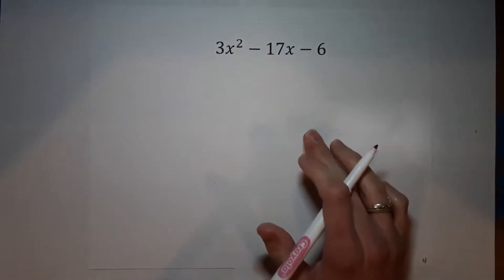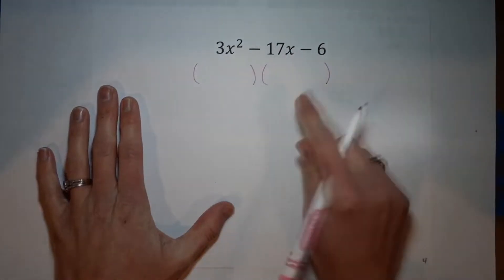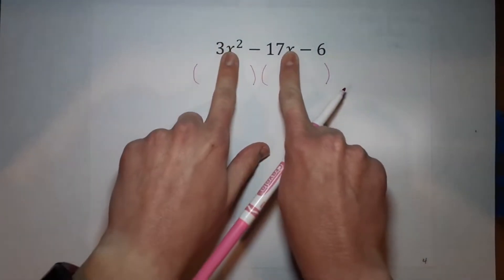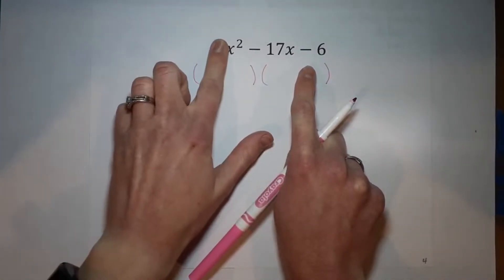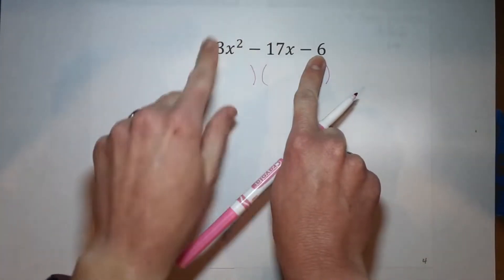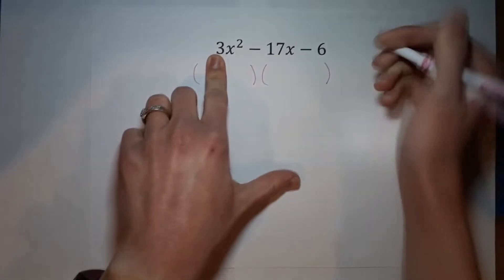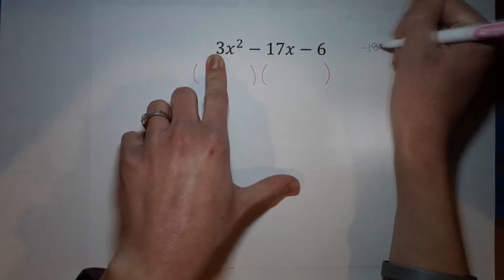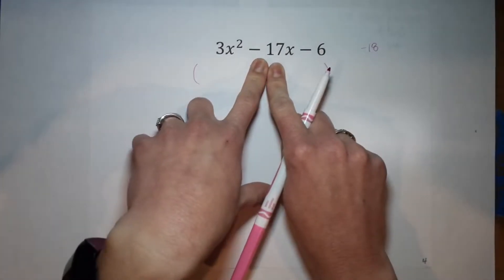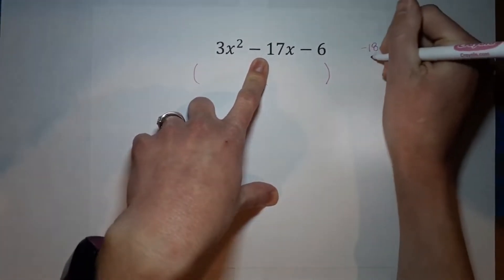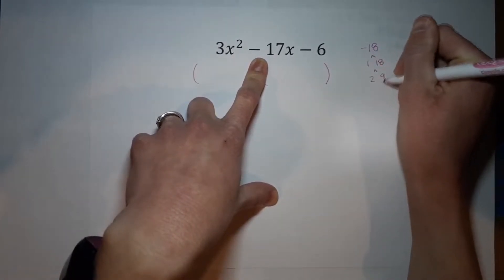So now what? Remember what we're looking for is two parentheses that multiply to each other to give me that. The first part is just like you've been doing when there's not a number here. You take this number here, multiply it by the one in front of the x squared, which gives me negative 18. Now I'm looking for the number that multiplies to negative 18 and adds to negative 17. You might already have it. We've got the factors are 1 and 18, 2 and 9, and 3 and 6.